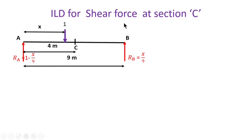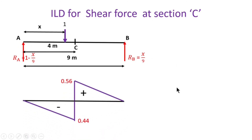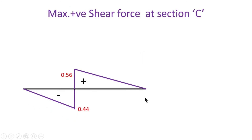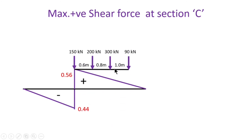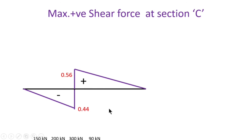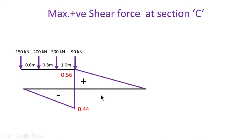Next, draw the ILD for shear force at section C. Apply a unit load at distance x from the left support, find reactions RA and RB. The ILD for shear force at section C has a negative part of 0.44 and a positive part of 0.56. Again, the question arises which load to keep on the section in the positive area, involving up to four possible trials.